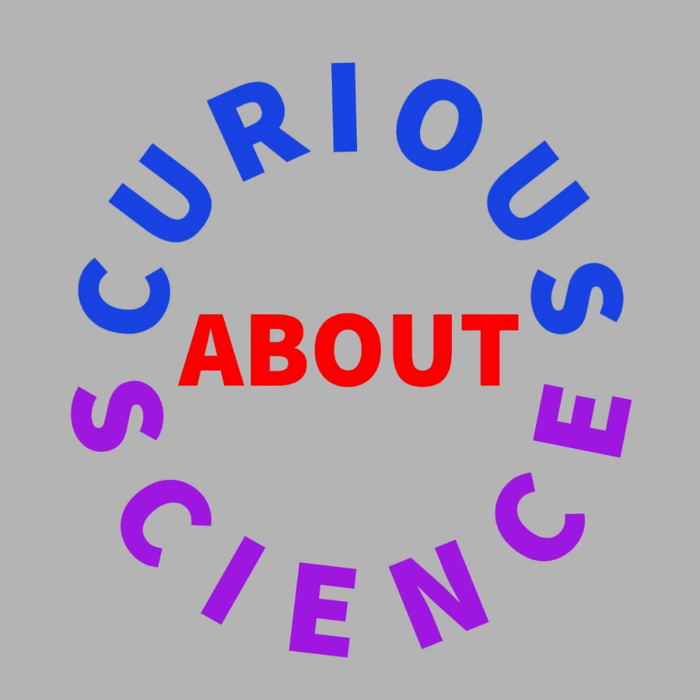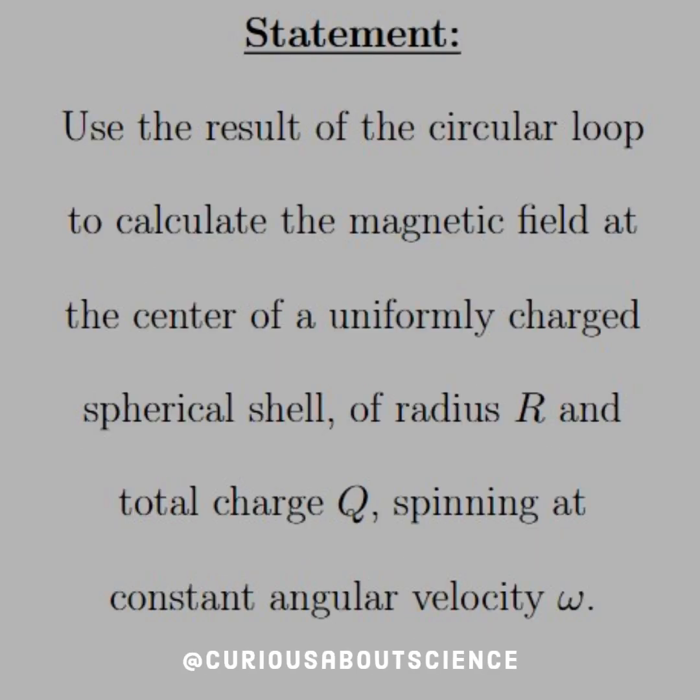Hey guys, got a quick but short problem, so let's jump in. The statement reads: use the results of the circular loop to calculate the magnetic field at the center of a uniformly charged spherical shell of radius R and total charge Q, spinning at a constant angular velocity omega.